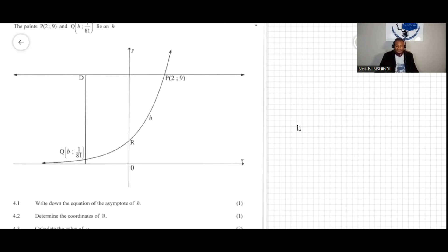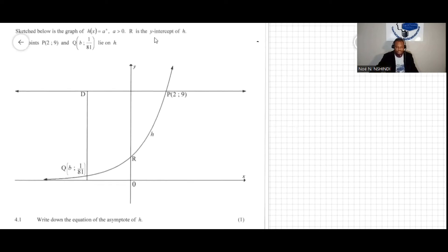Question 4.1 says: write down the equation of the asymptote of h. The asymptote is usually the dashed or invisible line — it's the line where the graph of the function doesn't touch. For this exponential function of the shape a to the power of x, the graph will not touch this horizontal line, and this horizontal line passes through zero. So the asymptote is the line y equal to zero.